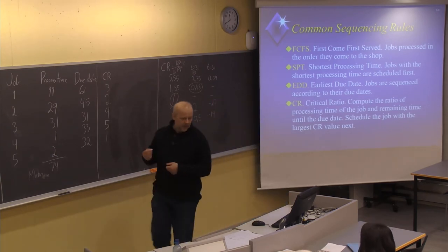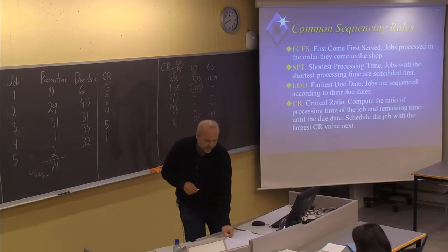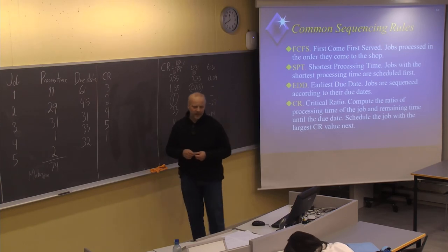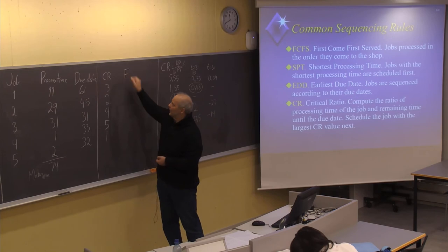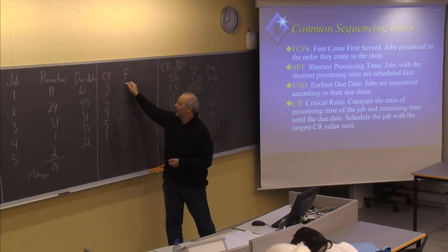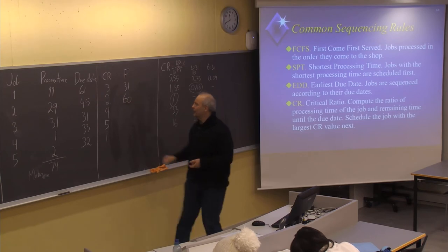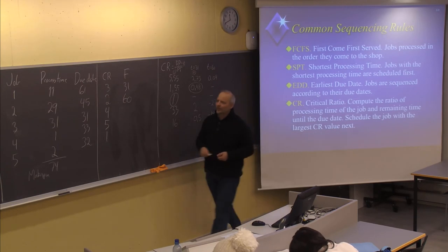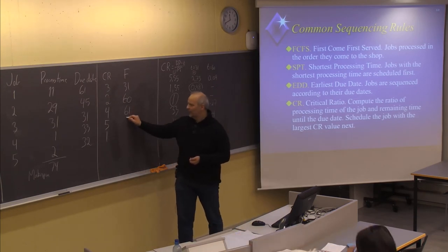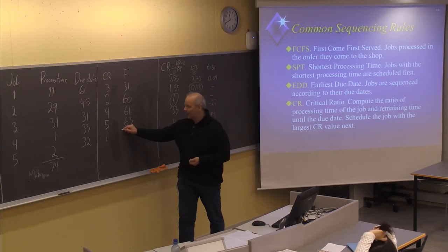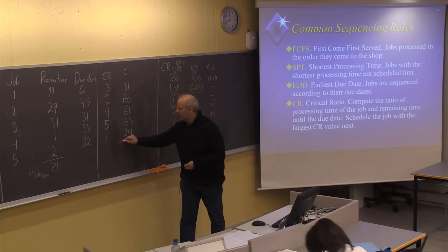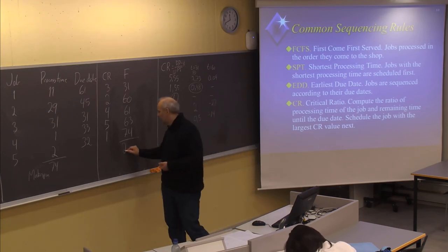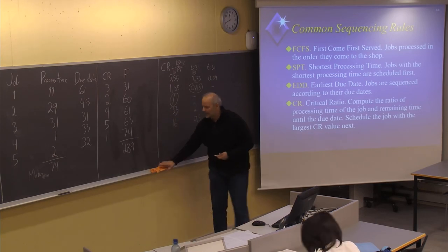Let's look at the different variables for the critical ratio strategy. The flow time or completion time: 31 for job number three, 60 for job number two — these are the same numbers as found before. Then job number four: one more day. Job number five: two more days. And job number one: 11 more days. This gives a total sum of flow time of 289.